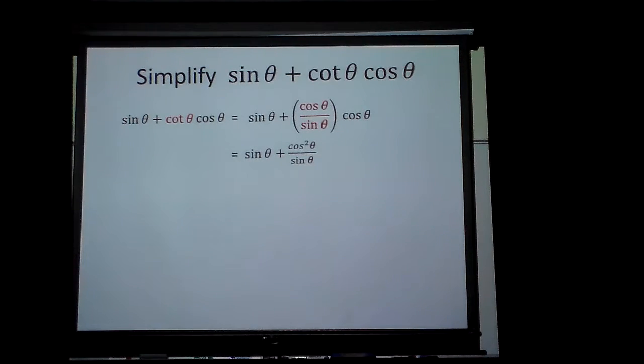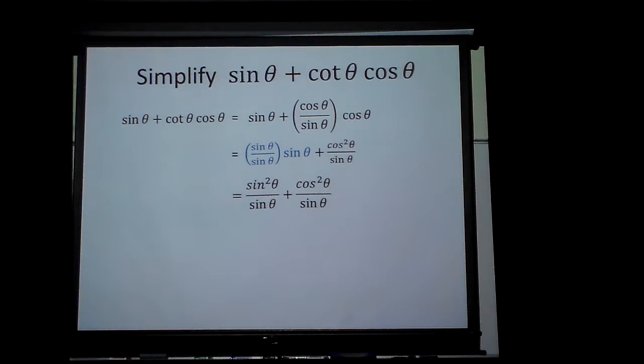So let's get a common denominator. The common denominator would be sine, so I would have to multiply sine over sine, because that's still one. When you multiply by one, you don't change it. And if I multiply these together, I'll end up with sine squared plus cosine squared.